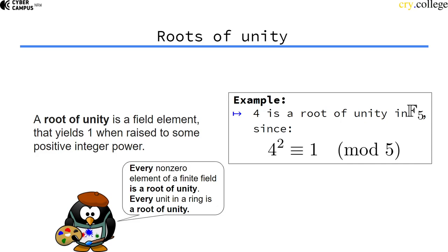It turns out every non-zero element in a finite field is a root of unity. Every unit, an element with an inverse in a ring, is also a root of unity.